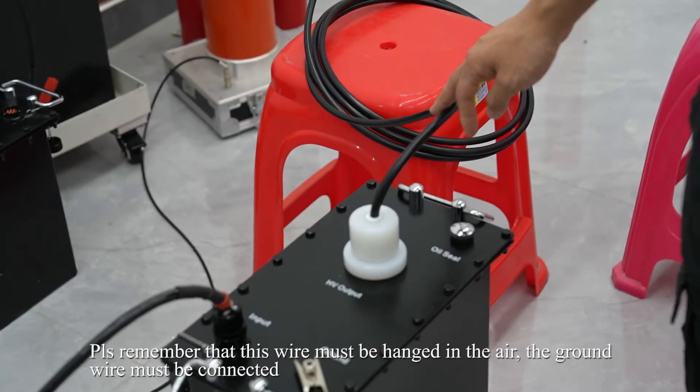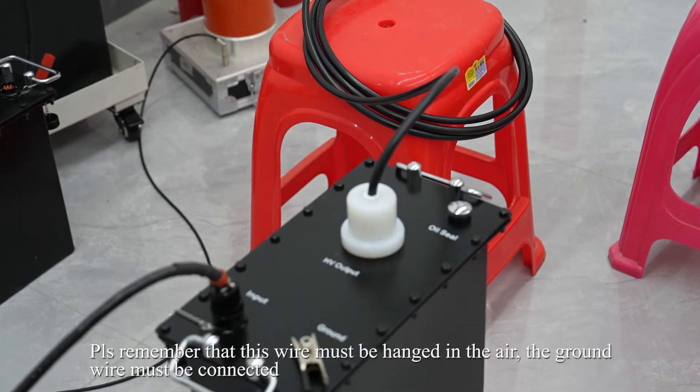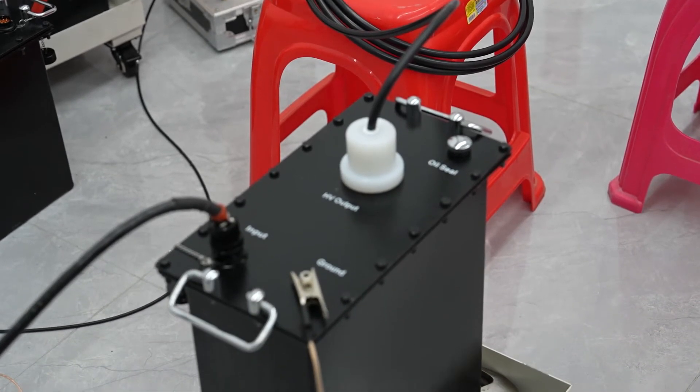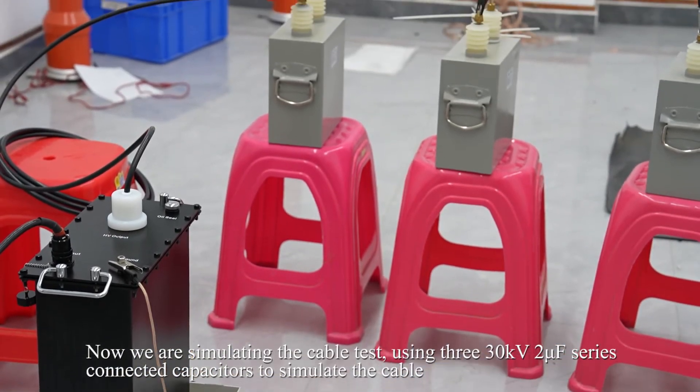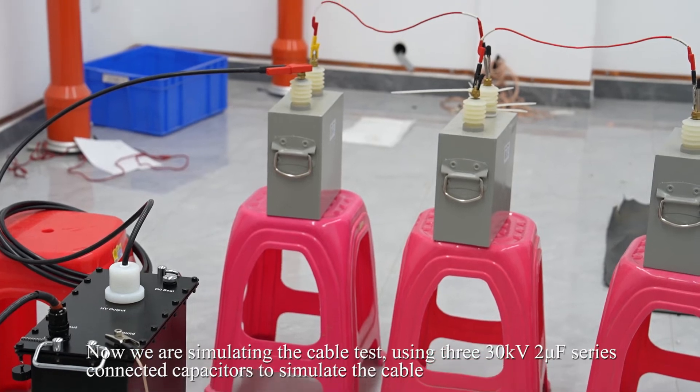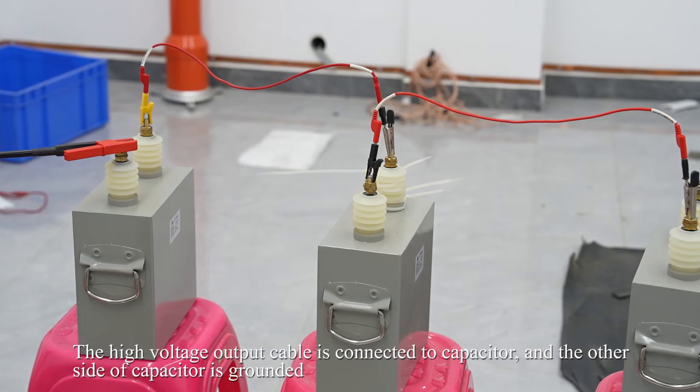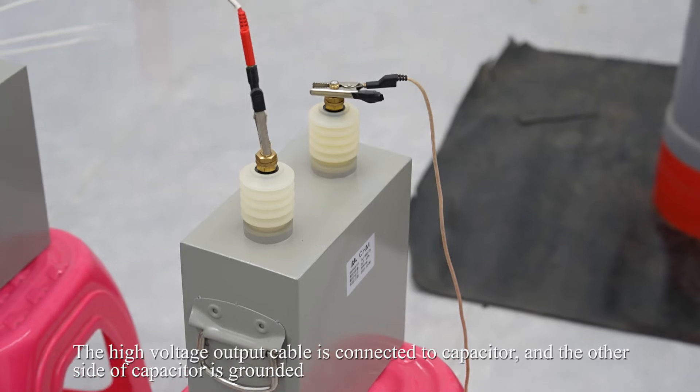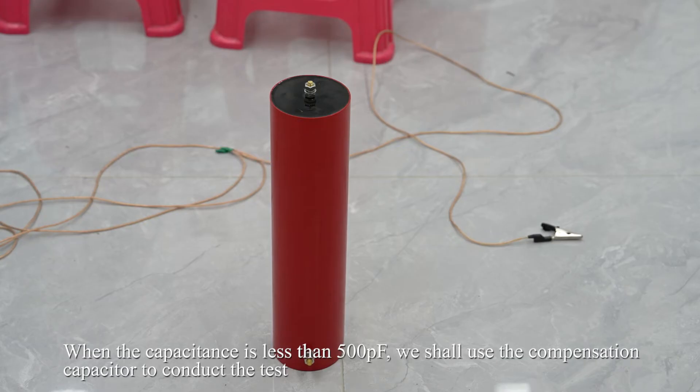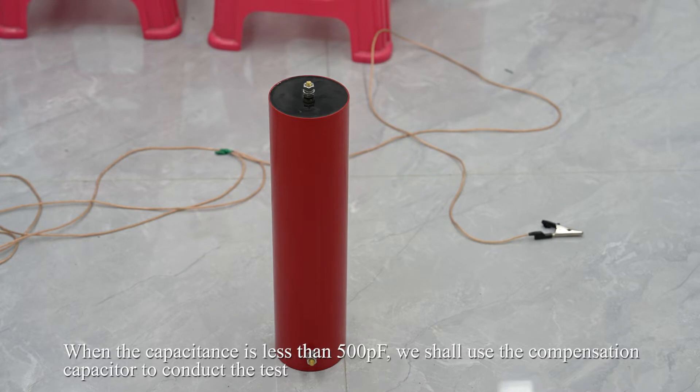Please remember that this wire must be hanged in the air. The ground wire must be connected. Now we are simulating the cable test. Use 3 pieces 30KV 2µF series capacitors to simulate the cable. The high-voltage output cable is connected to capacitor, and the other side of the capacitor is grounded. When the capacitance is less than 500 pF, we shall use the compensation capacitor to conduct the test.